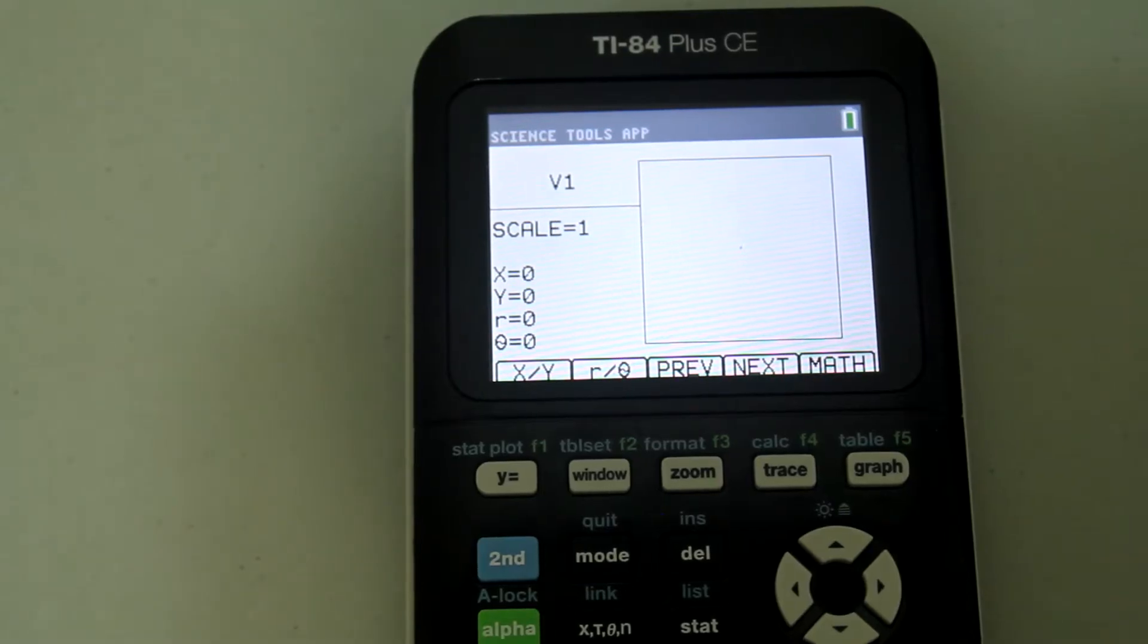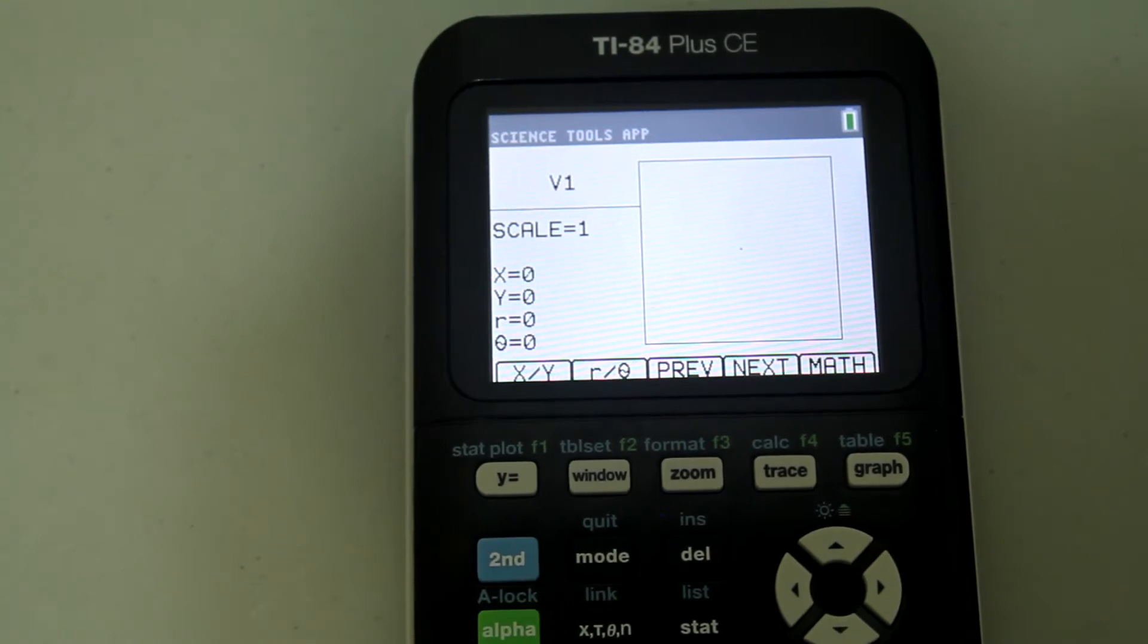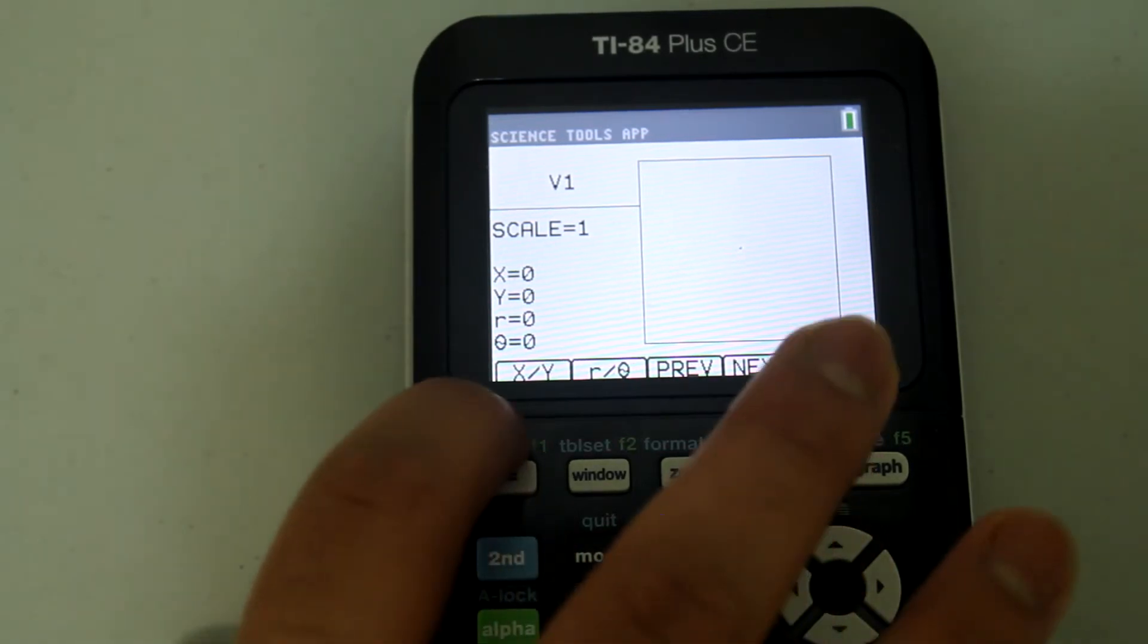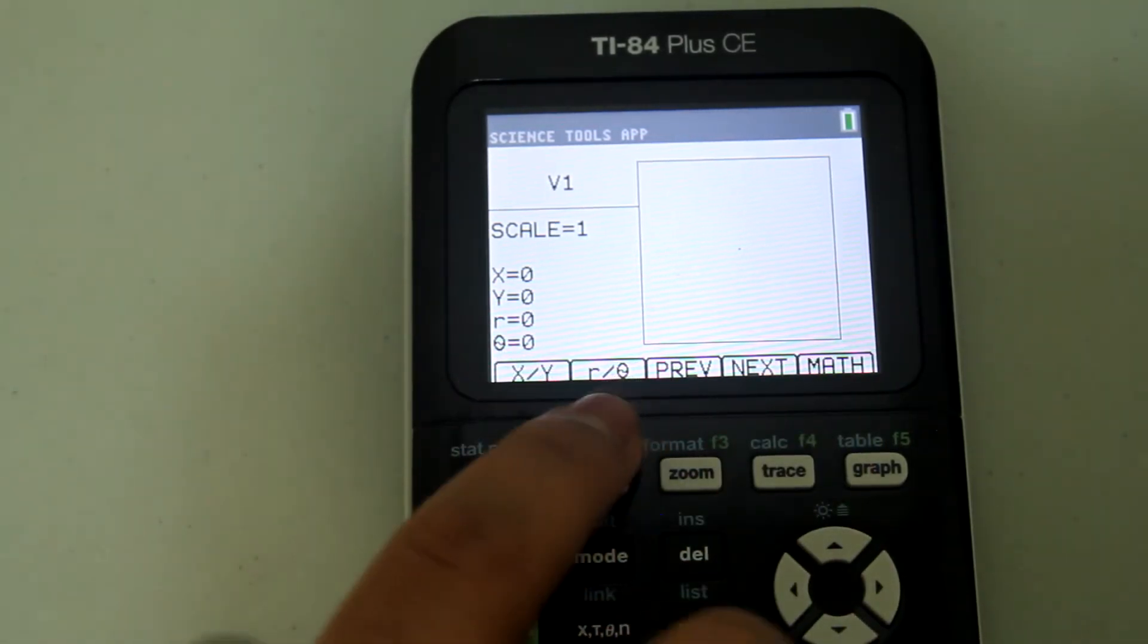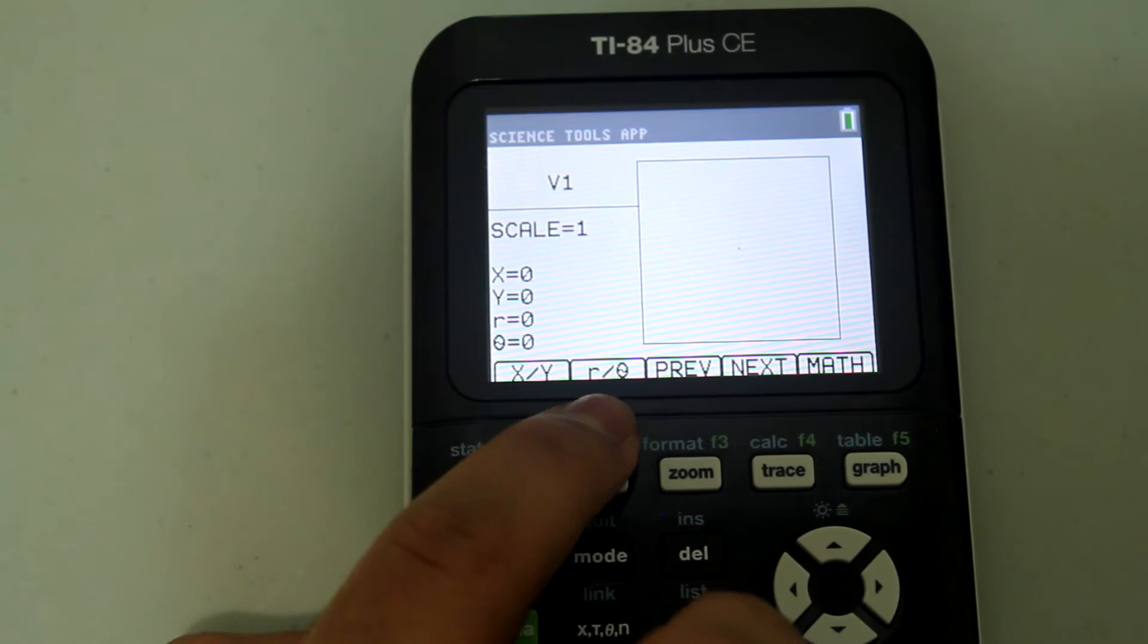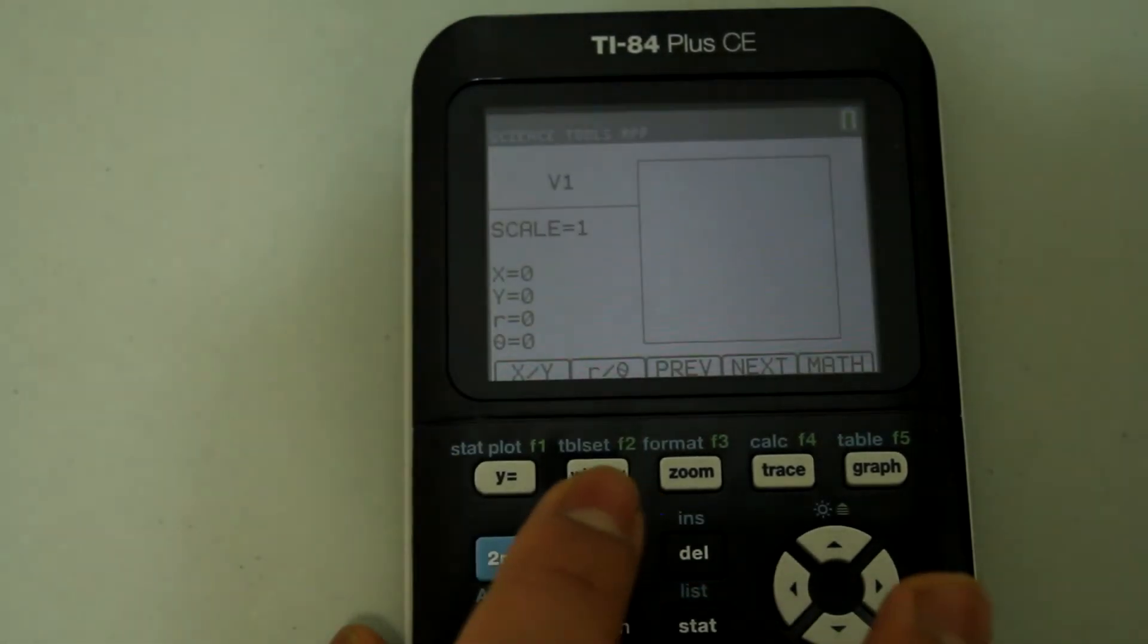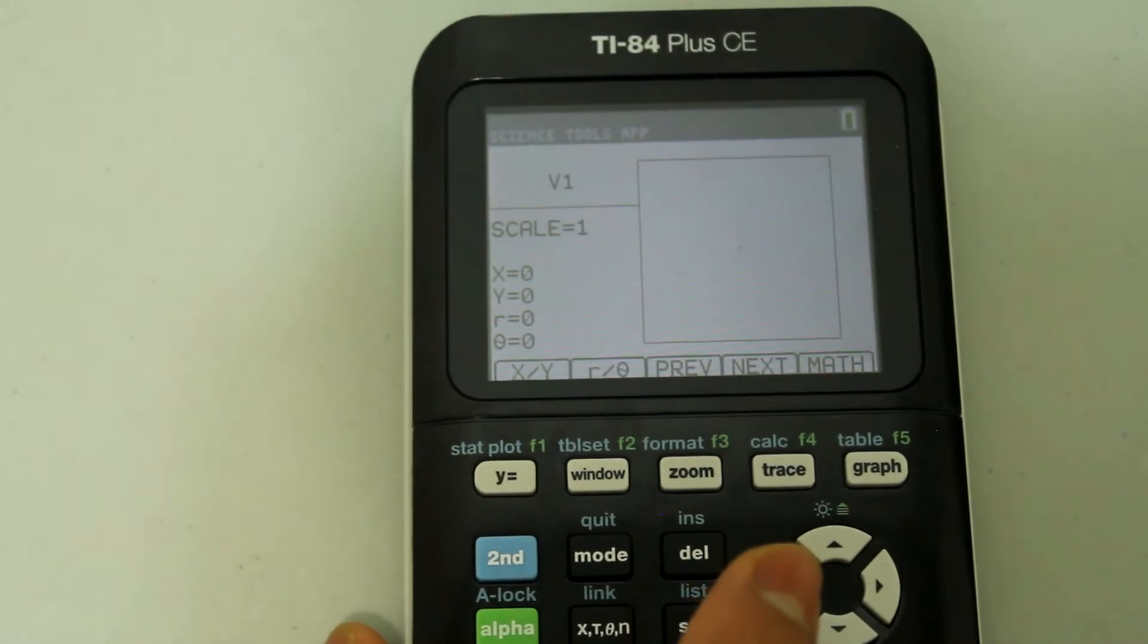Once in the vector calculator you can graph and make calculations with vectors. You can graph vectors by either entering the x and y components or by entering the resultant or radius and the theta. Keep in mind that the theta is with respect to the positive x axis. Let's do a few examples to clarify.